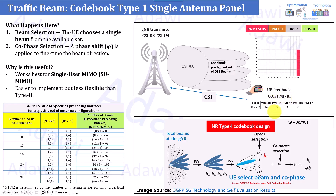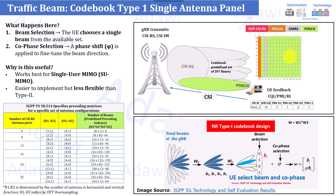The user reports back the CSI — channel state information — which includes CQI, PMI, and RI (rank indication). For example, the PMI includes PMI i11 and PMI i12, corresponding to values such as 3 and 1, representing the horizontal beam and vertical beam respectively, along with the co-phase. Based on this feedback, the gNB identifies the user's direction and allocates the PDSCH using that particular beam. The user then begins downloading normally. Next, we will explain N1, N2, O1, and O2 with a visualization example.